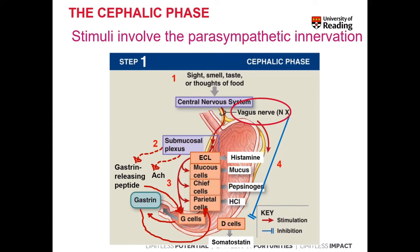At the same time, the stimulation of the vagal nerve and activation of the parasympathetic system will inhibit D cells, which secrete somatostatin, which itself inhibits the activation of parietal cells. So the vagal nerve acts in a double way: by both stimulating G cells, which stimulate the secretion of hydrochloric acid from parietal cells, and inhibiting D cells, thereby indirectly reducing somatostatin release.